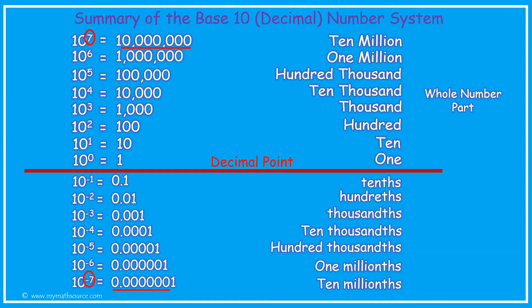As we learned previously, these larger numbers, we call them the whole number part, and the smaller numbers, the decimal part. We are going to use this to write our large numbers and our very small numbers using the base 10 system.